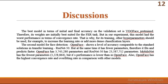That is why for its training other hyperparameters should be used, for example, to increase the learning rate or to add more dense classification layers. The second model for face detection, OpenFace, shows a level of accuracy comparable to the standard solution in transfer learning, ResNet-50. But at the same time, it has fewer parameters. Therefore, it fits and predicts faster. OpenFace has nearly 4 million parameters, and ResNet-50 has about 24 million parameters. MobileNet has the fewest number of parameters, about 3 million, but its performance is lower than OpenFace. Also, OpenFace has the highest convergence rate and overfitting rate in comparison with other models.